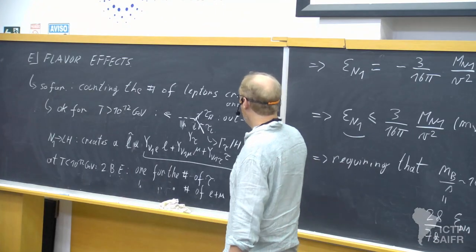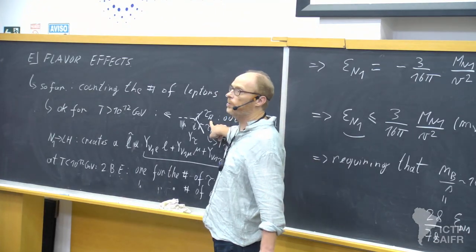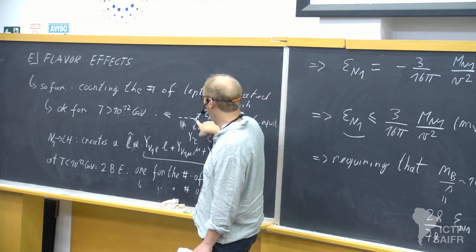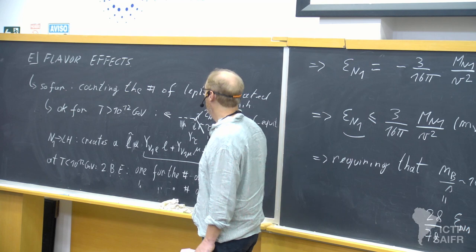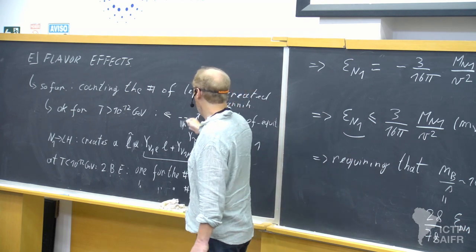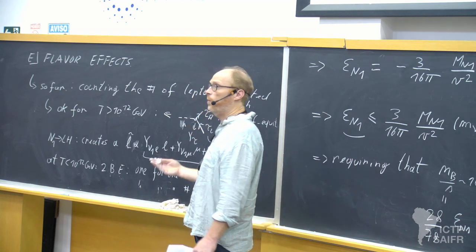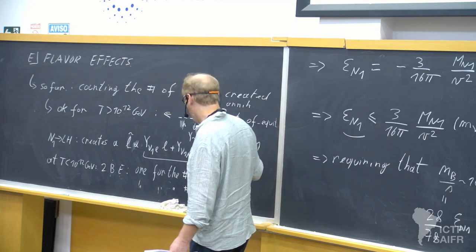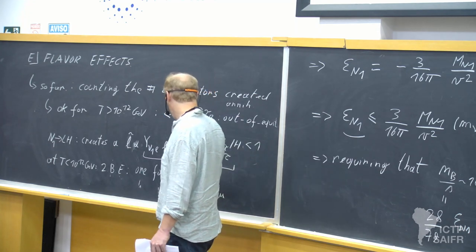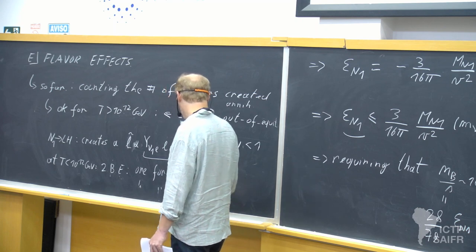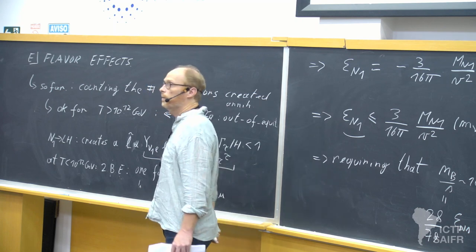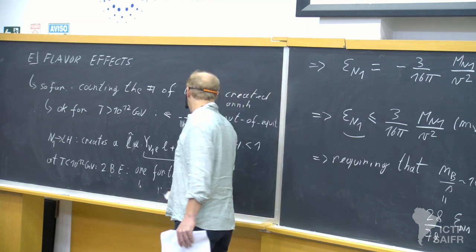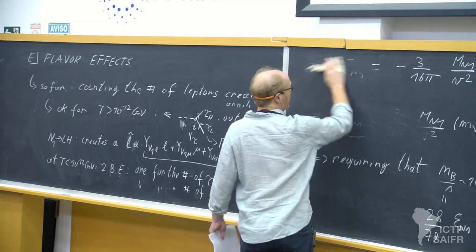At T < 10¹² GeV you need two Boltzmann equations: one for the number of tau leptons you create and annihilate, and one for the other combination e + μ. This is because only the tau Yukawa coupling is large enough for the corresponding interaction to happen in the thermal bath, so you must count the tau and the other combination separately. This changes the picture significantly.